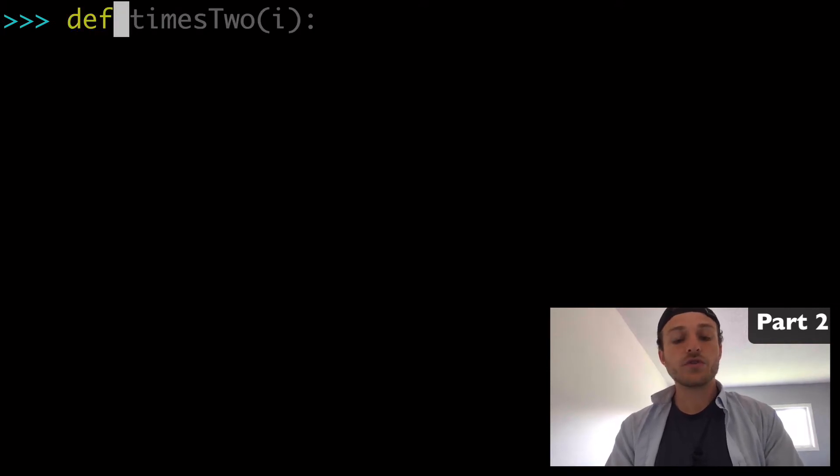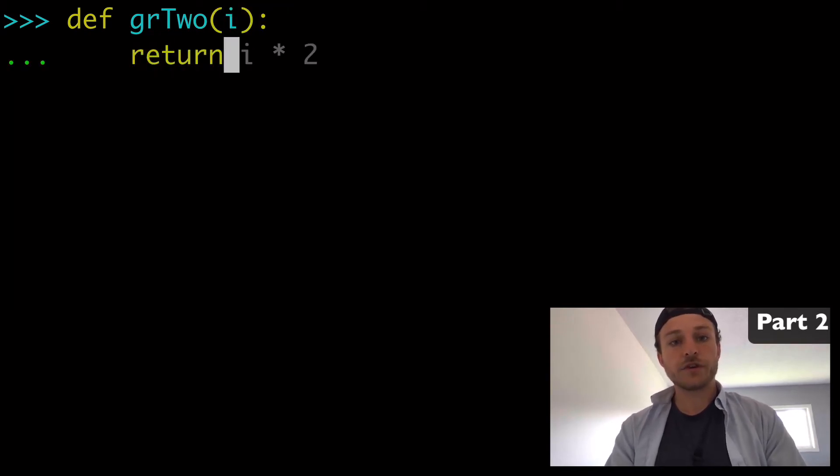So we'll do, let's say, greater than 2, to which we pass an integer, our argument i, and then we'll return i greater than 2. Okay? That should be good. So there's our function gr2.